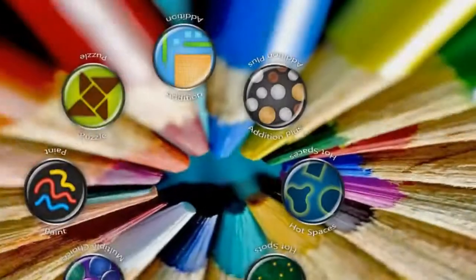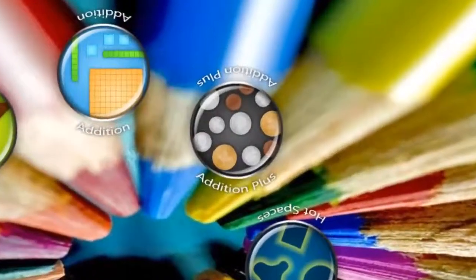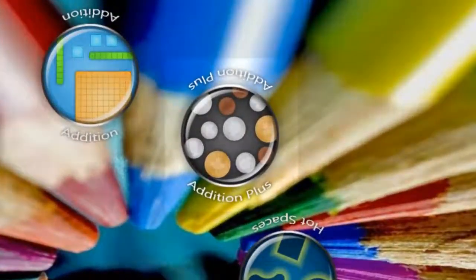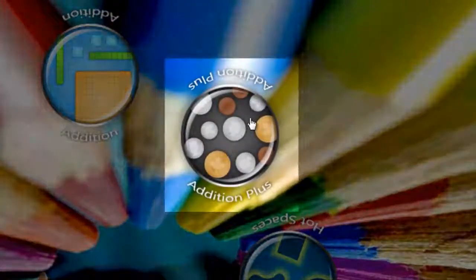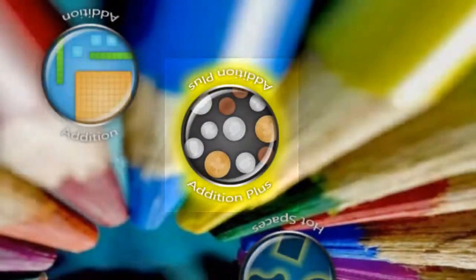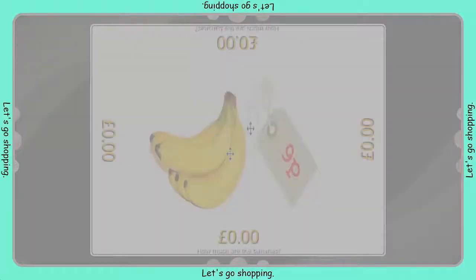Students use Edition Plus to answer teacher-defined sets of math questions using visual objects. When students access Edition Plus, they can move a block or a coin by pressing and dragging it across the surface.